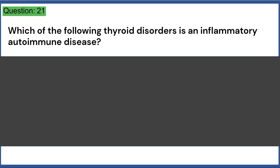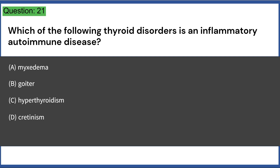Which of the following thyroid disorders is an inflammatory autoimmune disease? A. Myxedema, B. Goiter, C. Hyperthyroidism, D. Cretinism, E. Hashimoto's thyroiditis. Answer: E.